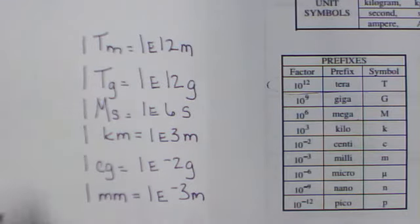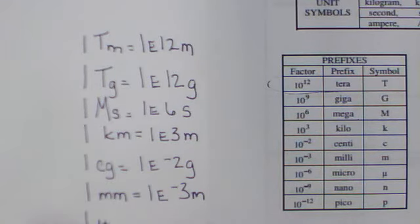Okay, one more. 1 microsecond equals 1E negative 6 seconds.